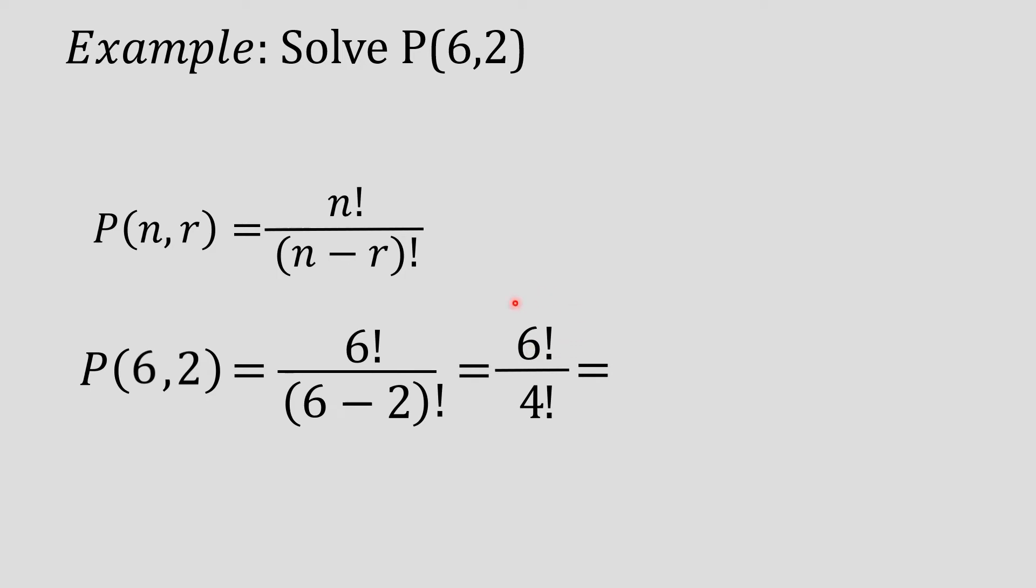Next, 6 factorial is just the same as 6 times 5 times 4 up to 1. So if you multiply that, we'll have 720. And on the denominator, 4 factorial is 4 times 3 times 2 times 1, which is equal to 24. And then divide, 720 divided by 24 is just 30.